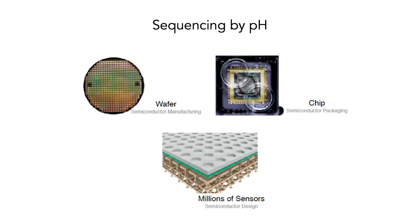Ion Torrent works on the idea of pH. You've got a silicon wafer — basically the foundation of computer chips — and on it there are millions and millions of sensors. If you look at the bottom image, there are all these little wells, and then there's material underneath. Each one of those wells is effectively a little independent pH meter. It's all wrapped up in a package that's also got a computer chip. Basically this is sequencing on a silicon computer chip.